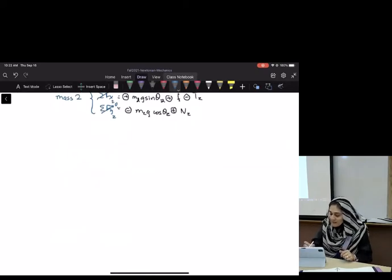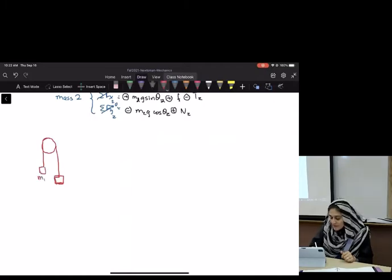Okay, one more challenge before we do anything else. This is called an Atwood's machine. So, M1, M2, and a pulley. Ignore that the pulley has mass. Write the Newton's equations.